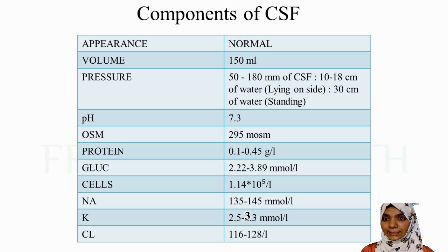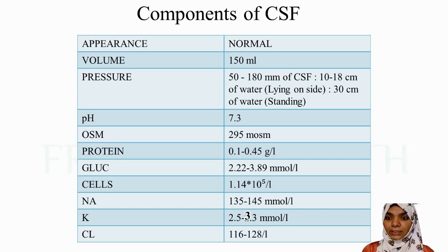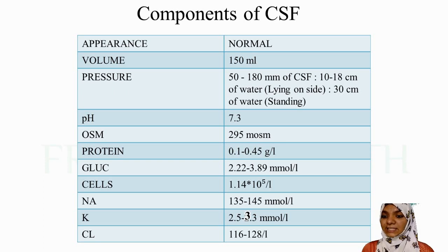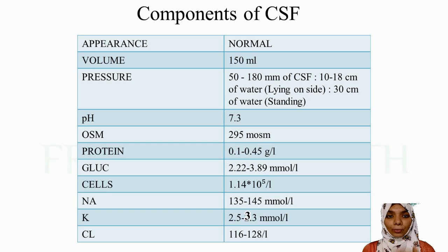CSF appears as a normal clear colorless fluid. Volume is 150 ml. Pressure is 50 to 180 mm of CSF - 10 to 18 cm of water lying on side, 30 cm of water while standing. pH is 7.3. Osmolality is 295 milliosmol. Protein is 0.1 to 0.45 g/L. Glucose is 2.2 to 3.89 mmol/L. Cells: 1.14 × 10⁵ per liter. Sodium 135-145 mmol/L, potassium 2.5-2.3 mmol/L, chloride 116-128 mmol/L.